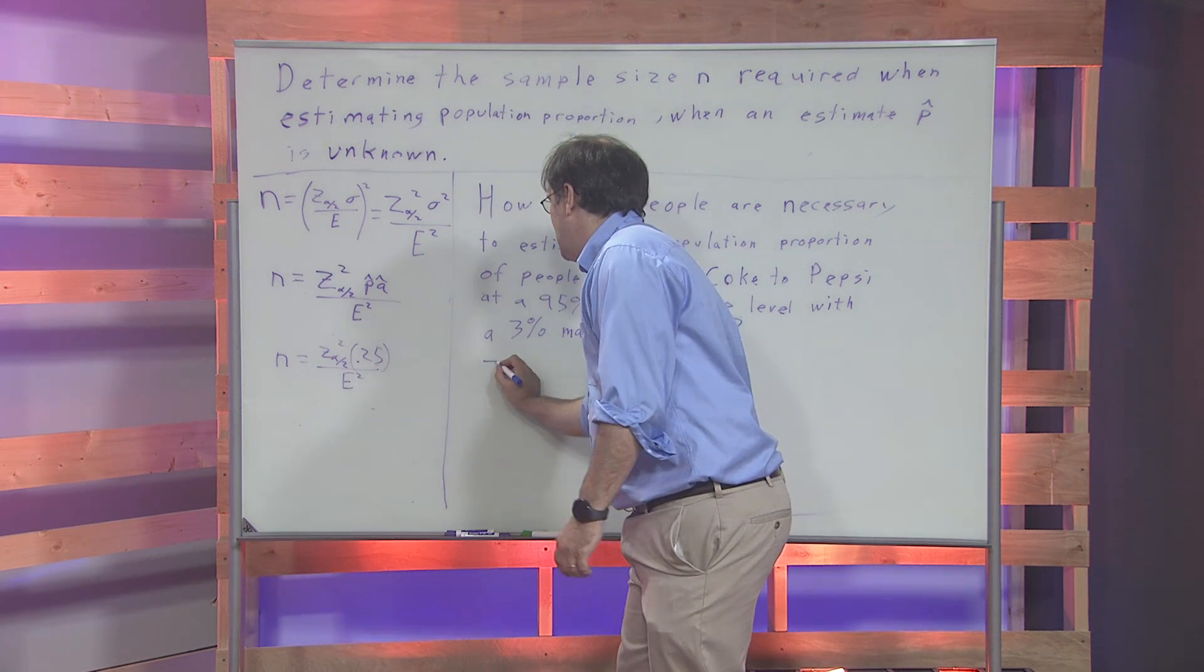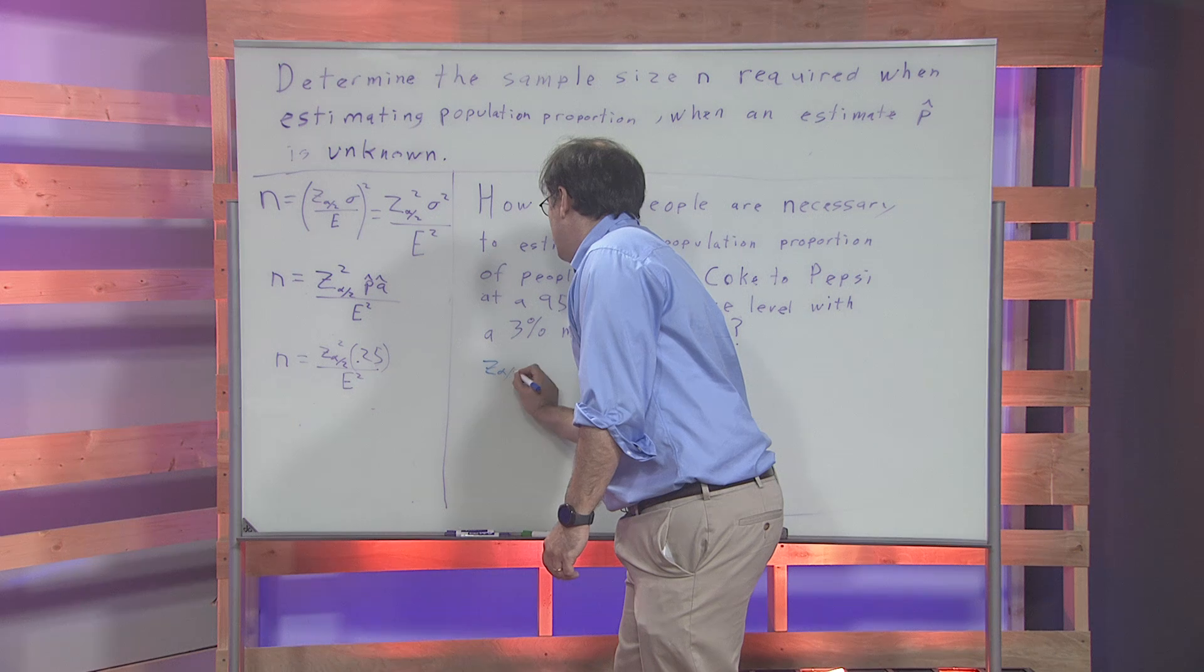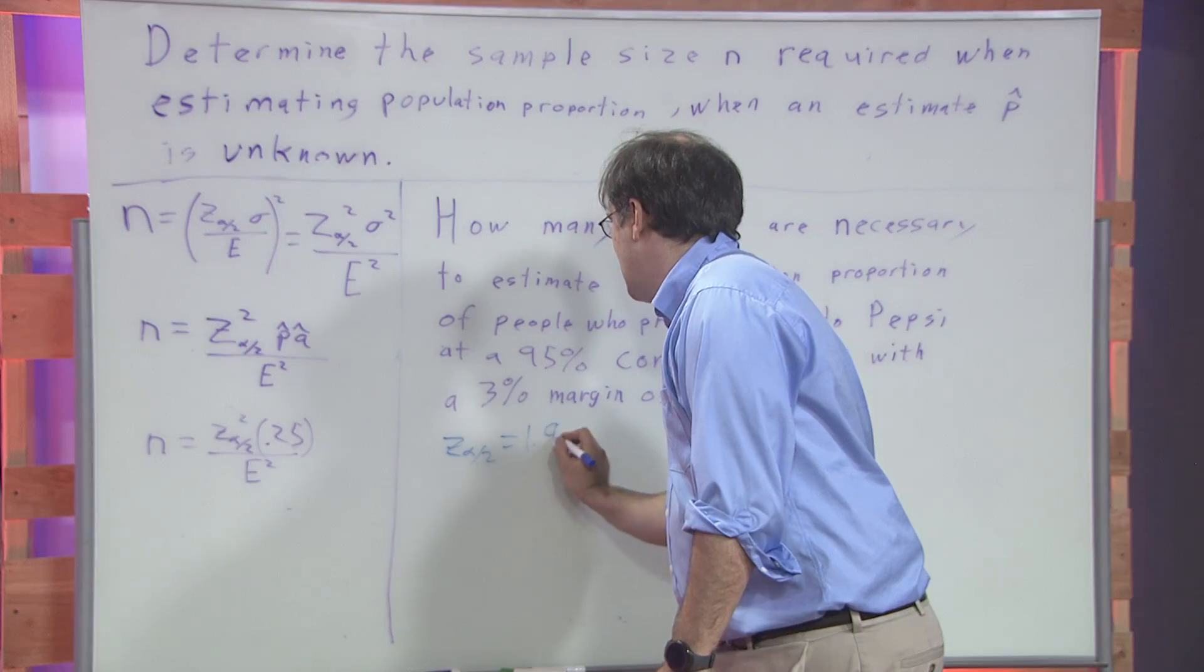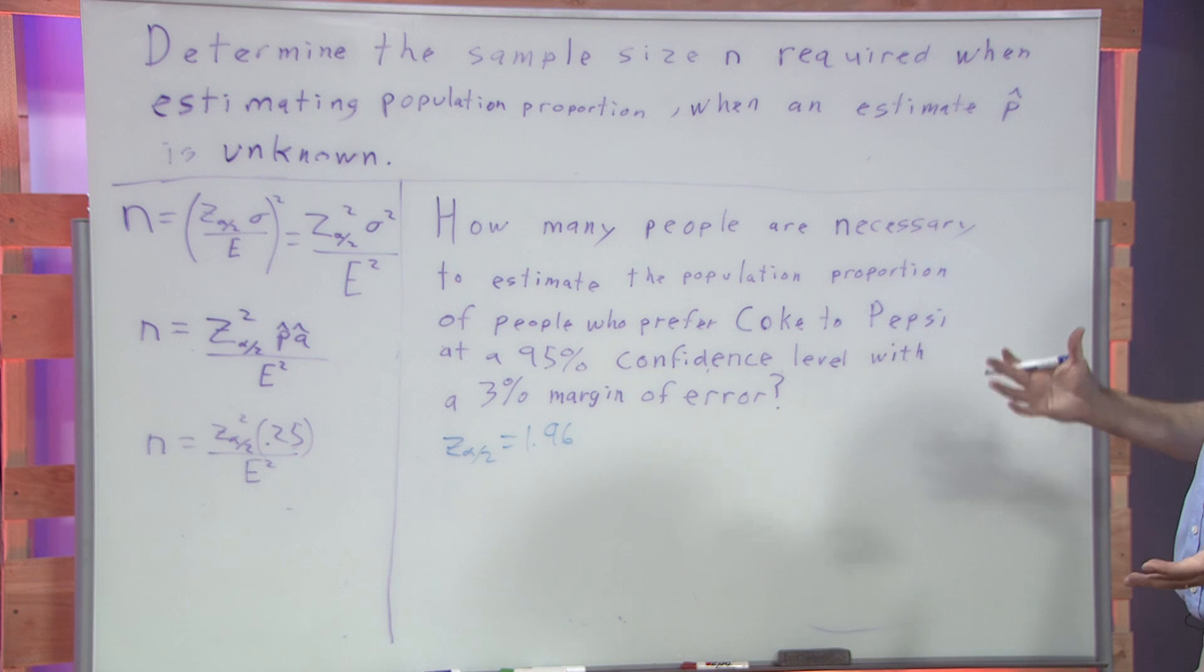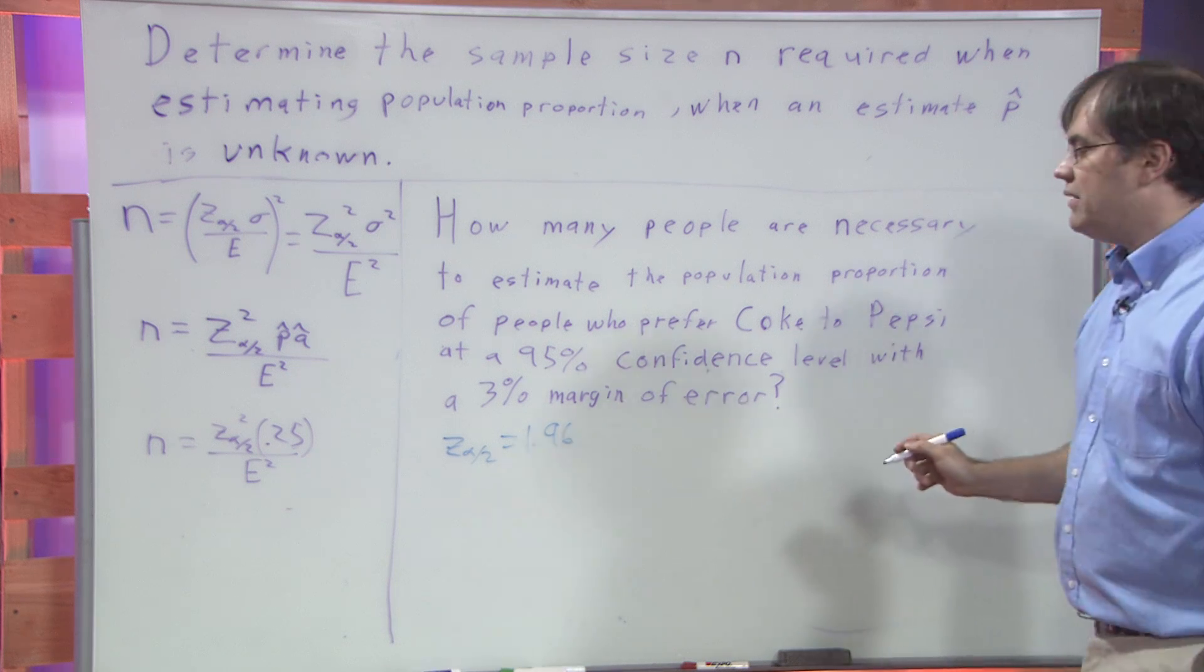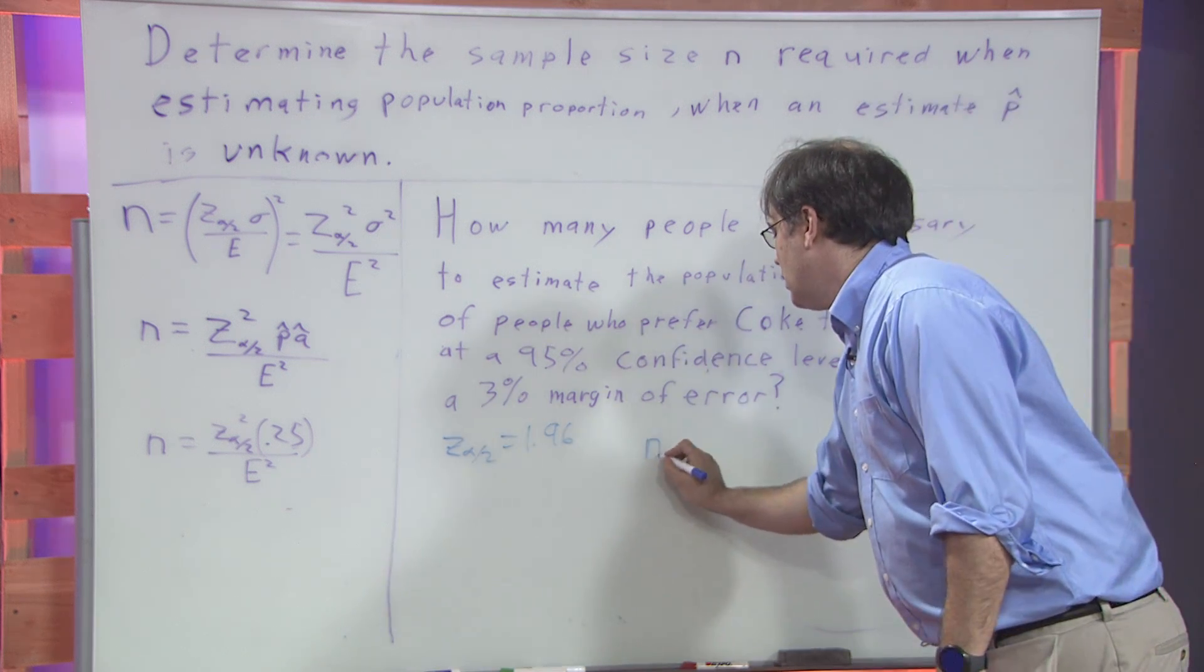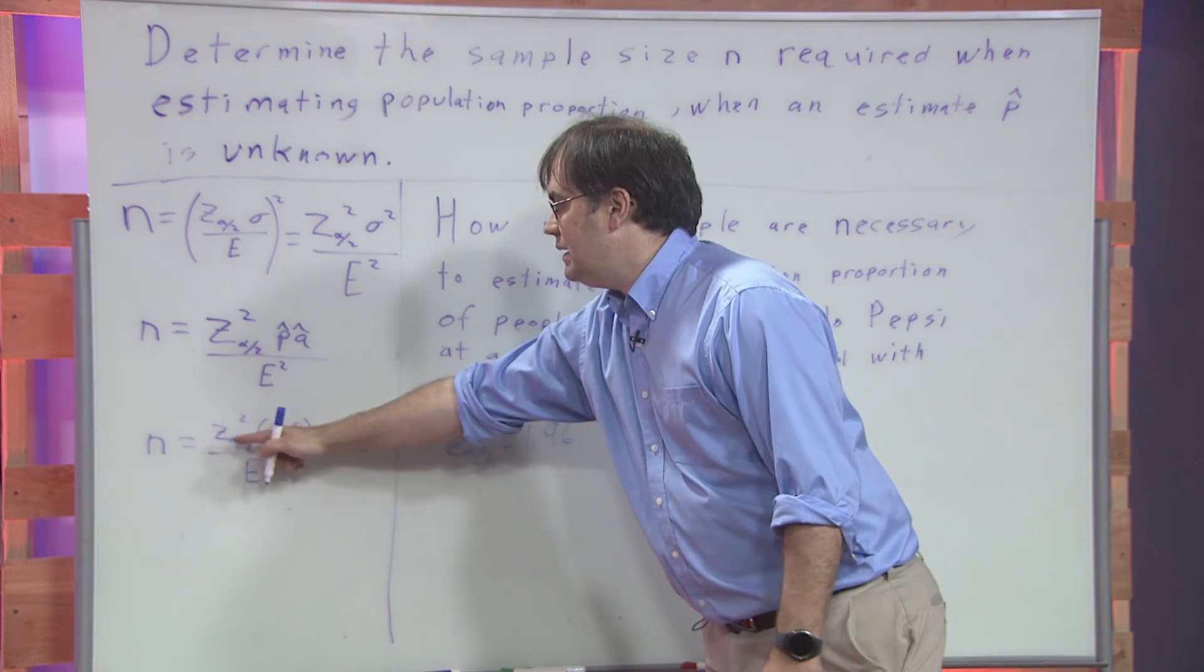Picking out the pieces, we know that Z alpha over 2 is 1.96. That's what we've calculated before for our critical values. And so we have all the information that we need.